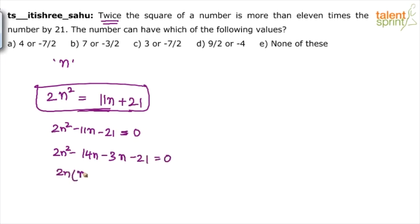So take 2N common, we get N minus 7. Sorry, this should be plus 3. Minus 14 plus 3. Minus 14N plus 3N is minus 11N. Minus 14 into 3 is minus 42. Then you take 3 common, plus 3 common, we get N minus 7 equals to 0.